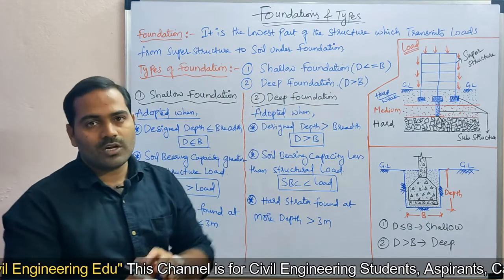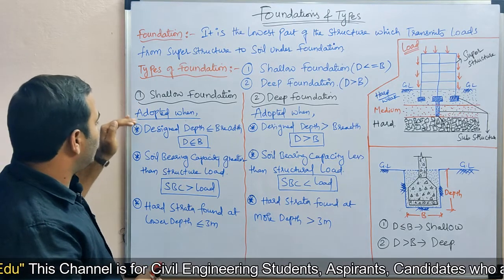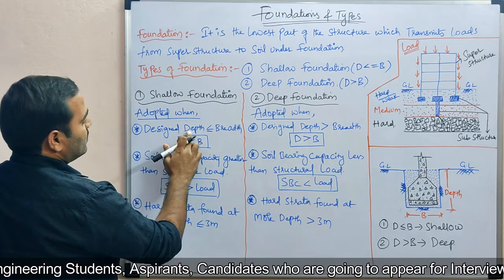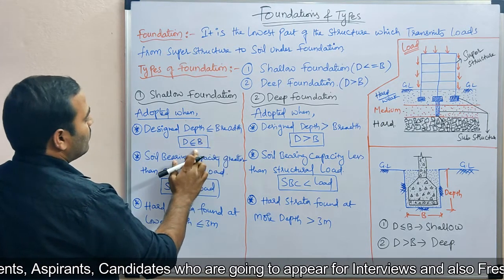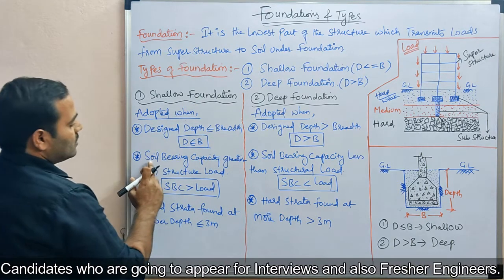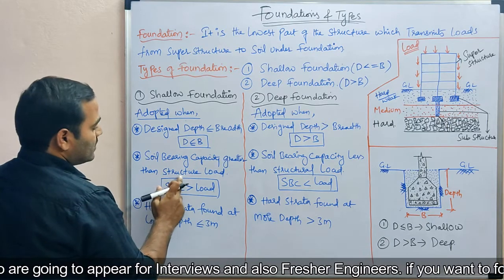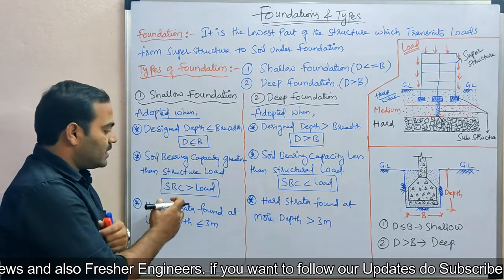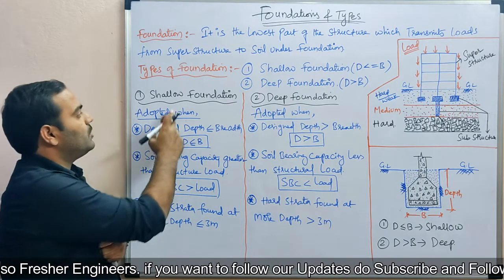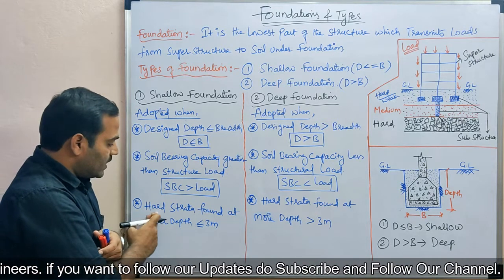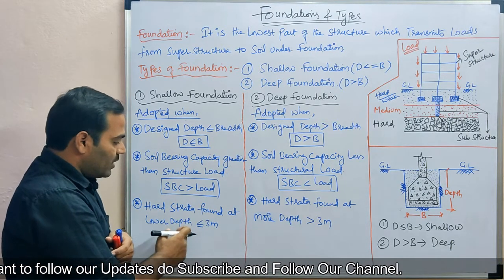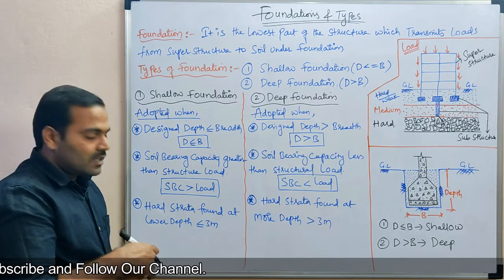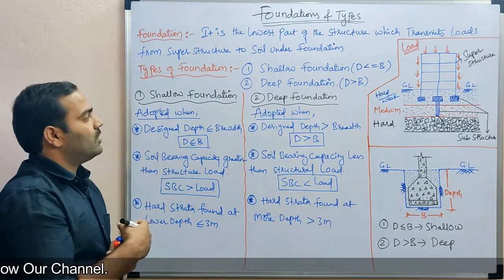Shallow foundations are adopted when these three conditions are met: first, design depth is less than or equal to breadth; second, soil bearing capacity is greater than the structural load — when the soil bearing capacity is more and the structural load acting is less; third, hard strata is found at a lower depth, that is less than or equal to 3 meters.